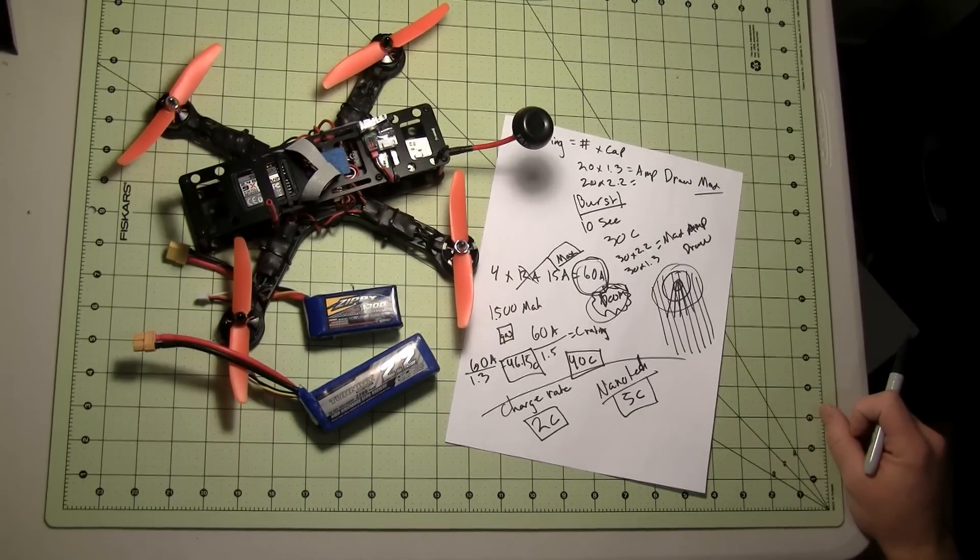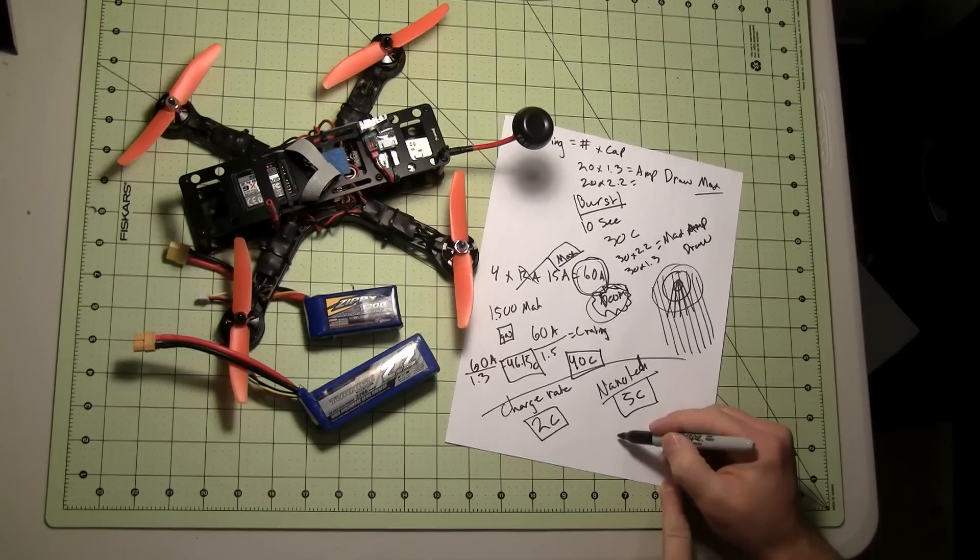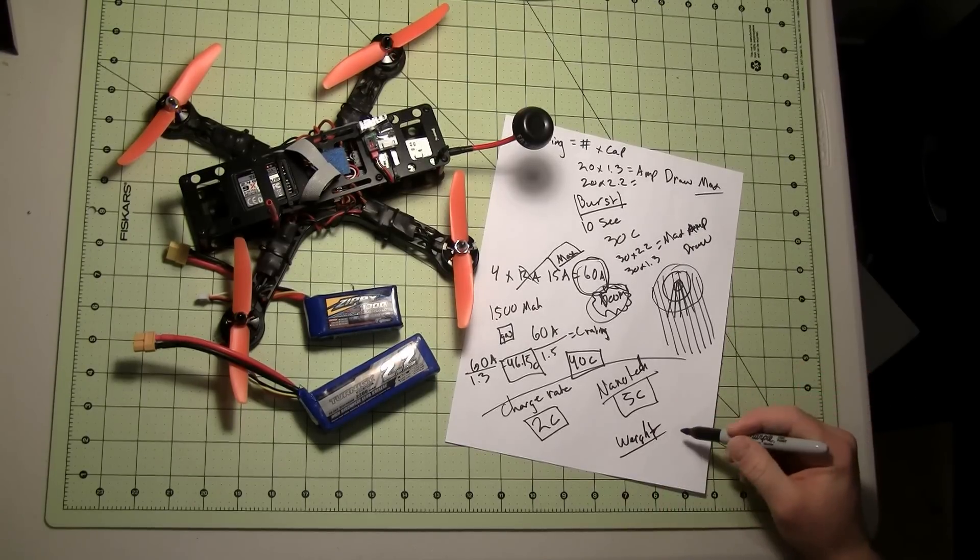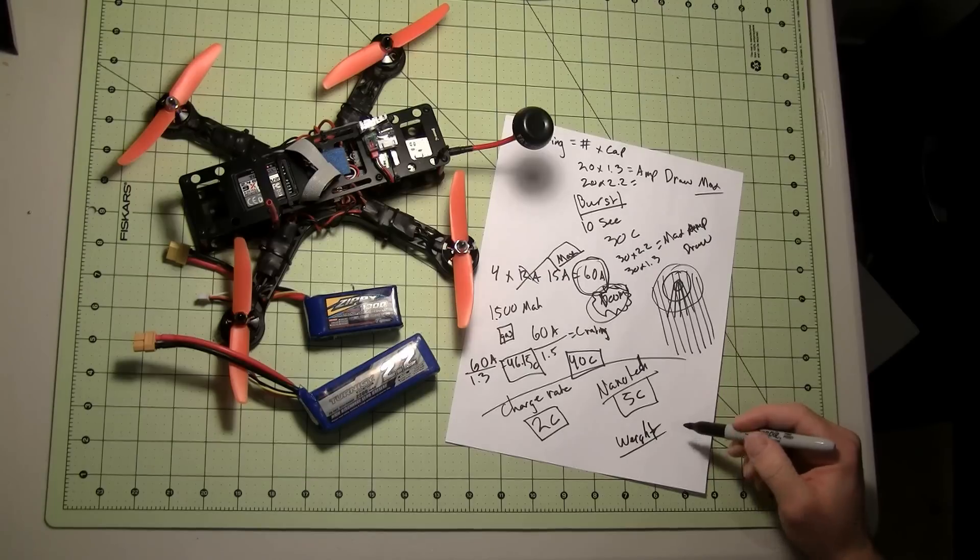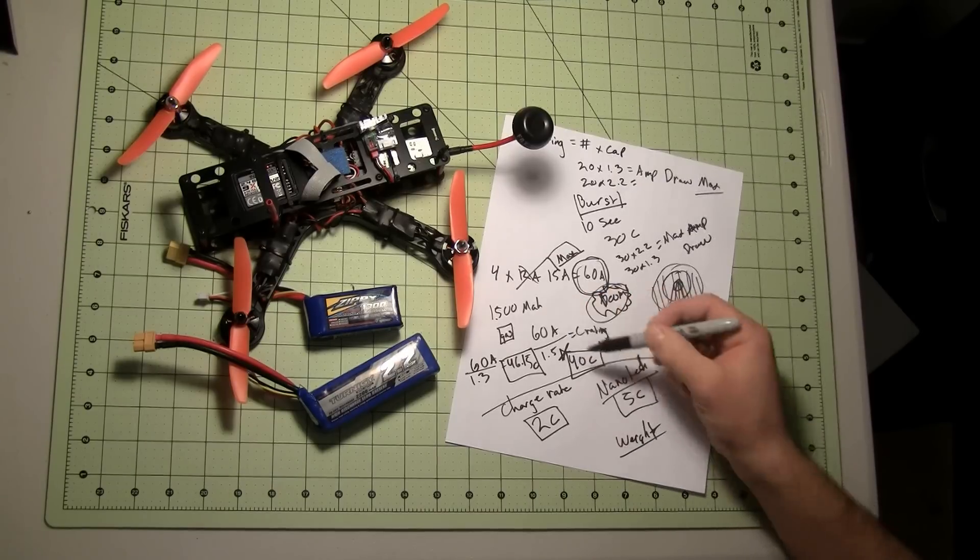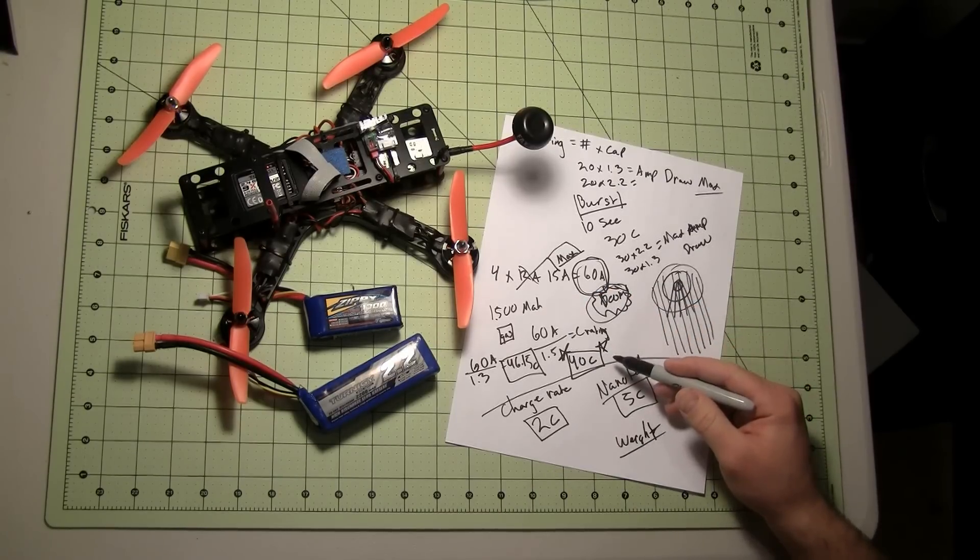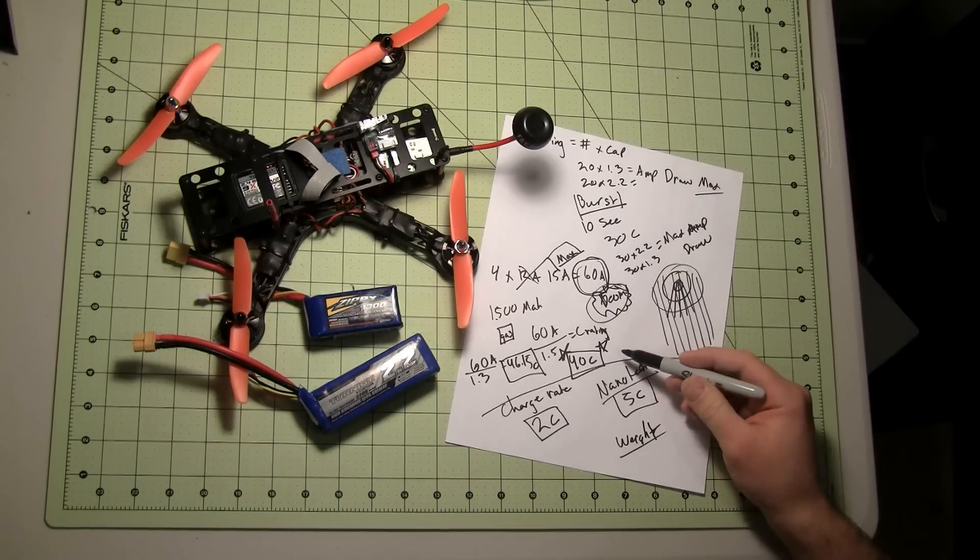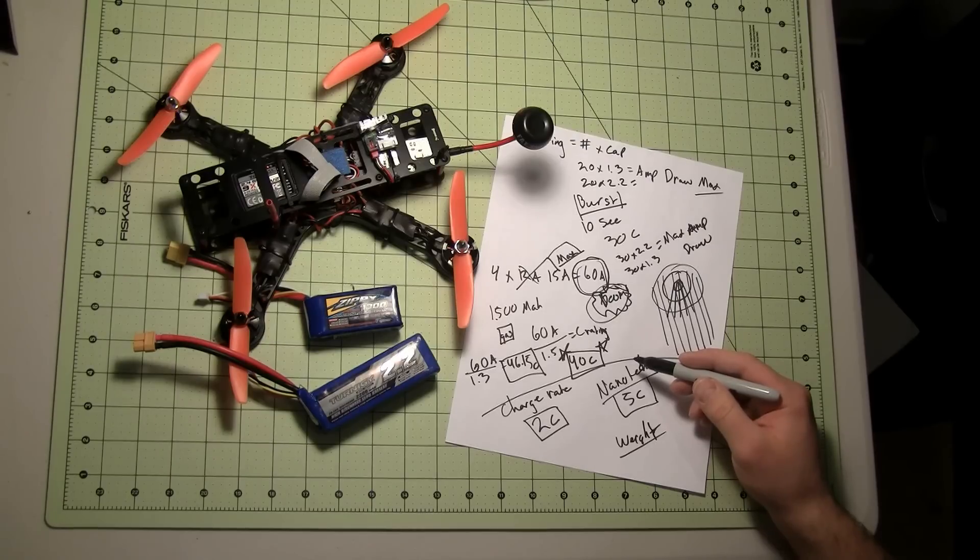The last thing to consider when looking at batteries is weight. Keep in mind your C rating, you don't want to waste. I don't need to go past 40C on a 1500 milliamp hour battery, so I don't need to waste money on getting a better C. So I'm going to try and get low weight, and maybe a 30 to 45C battery. It gives me a good punch. Past that, I'm just going to blow things up.